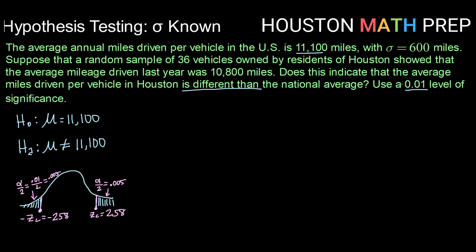So let's calculate that test statistic or our Z star using X bar minus mu over sigma divided by the square root of n. So our X bar minus mu is 10,800 minus 11,100, over our sigma for our population here is 600 divided by the square root of the number in our sample, which was 36.